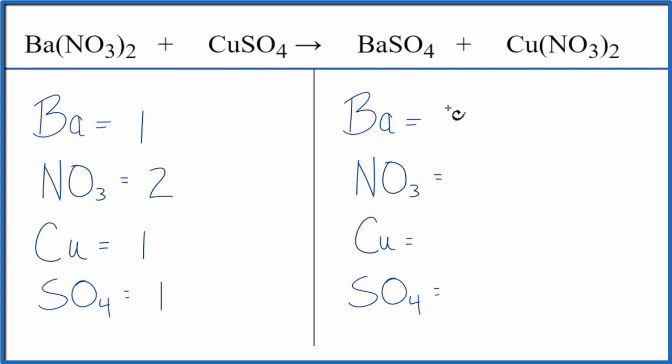On the product side, we have one barium, we have one of the sulfates, we have one copper, and then we have one nitrate times two, that gives us two of those. And you can see the numbers on each side, they're the same, so this equation is balanced.